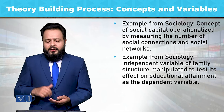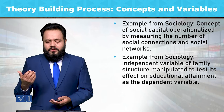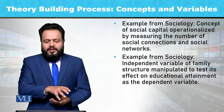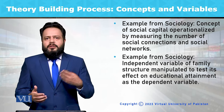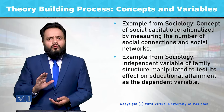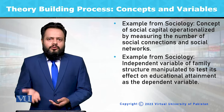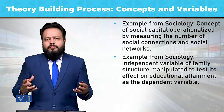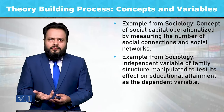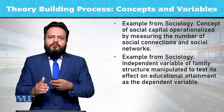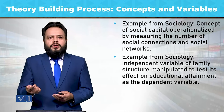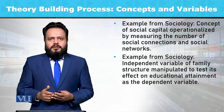Isi tarah hum agar independent variable ki misal lein, to family structure manipulated to test its effect on educational attainment. Jaise pichli misal mein hum ne happiness ko independent variable ke tor pe liya aur uska effect educational attainment pe dekha. To ye dependent aur independent variables ko hum hypothesis ke andar test karte hain, aur agar is ko bar bar test karne se humare paas ek hi natija baramat hota hai, to phir hum theory building process ki taraf chale jate hain.